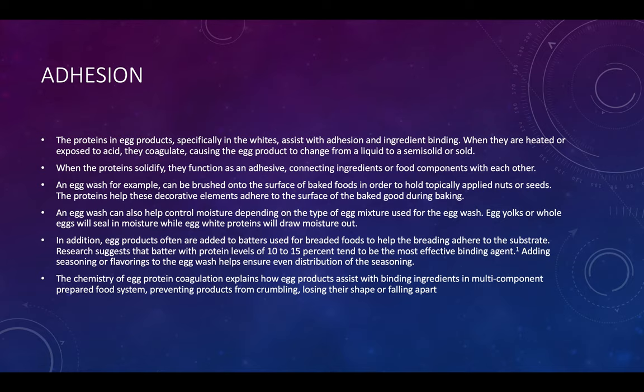Adhesion: the proteins in egg products, specifically in the whites, assist with adhesion and ingredient binding. When they are heated or exposed to acid, they coagulate, causing the egg product to change from a liquid to a semi-solid or solid. When the proteins solidify, they function as an adhesive, connecting ingredients or food components with each other.